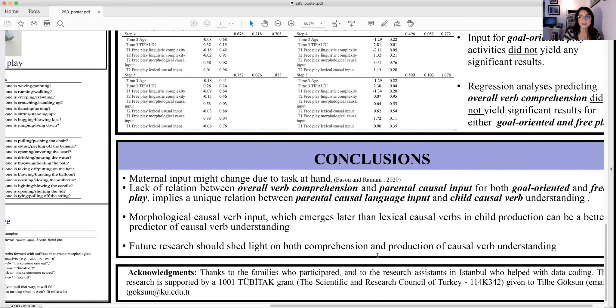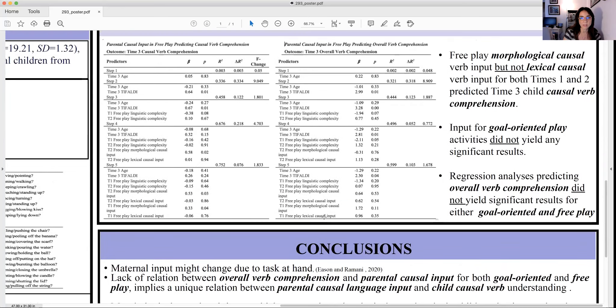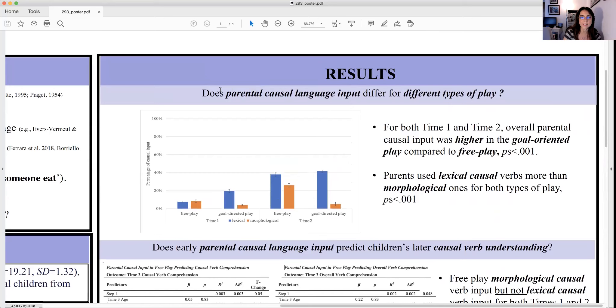When we see our results, what did we see? For the first research question we asked, does parental causal language input differ for different types of play? For time one and time two, we found that overall parental causal input was higher in goal-directed or goal-oriented play compared to free play, which is meaningful. And also, parents use lexical causal verbs more than morphological ones for both types of play.